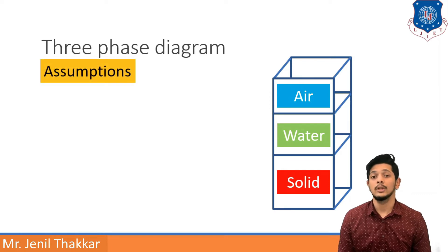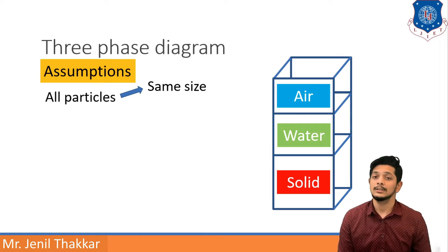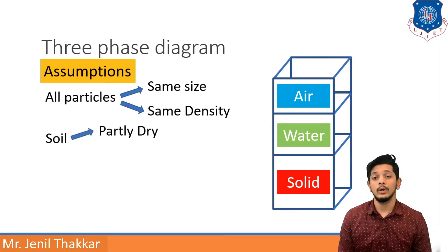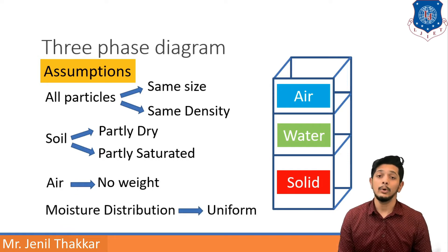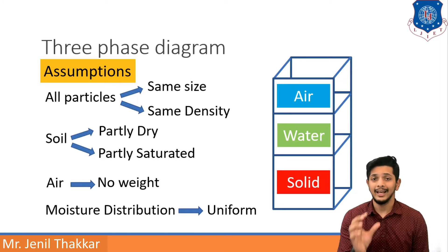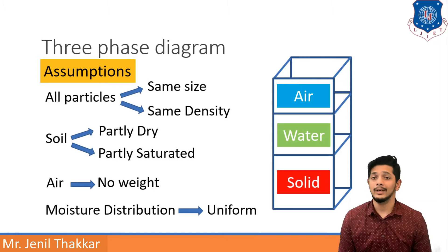To understand the three-phase diagram, we make some assumptions. First, all particles are of the same size and same density. The soil will be partly dry as well as partly saturated. Air will have zero weight — the weight of air is neglected. And moisture distribution should be uniform throughout the soil, so every soil particle will have uniform moisture distribution. These are the assumptions made for the three-phase diagram.